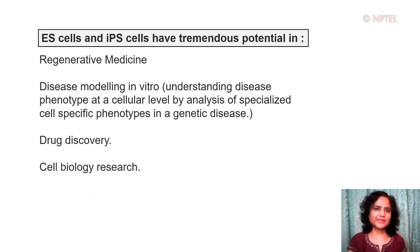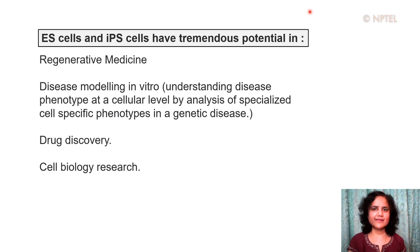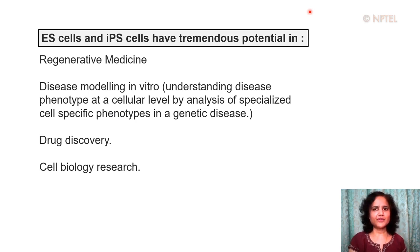In conclusion, embryonic stem cells and induced pluripotent stem cells have tremendous potential in the field of regenerative medicine. They are useful for disease modeling in vitro — understanding disease phenotypes at a cellular level by analysis of specialized cell type-specific phenotypes in a genetic disease. They are also useful in drug discovery using these in vitro disease models, and they are very useful in cell biology research. Thank you.